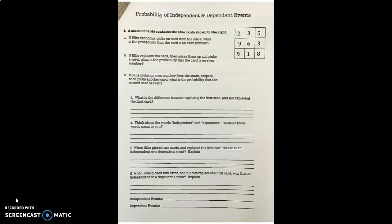The probability of independent and dependent events. Remember, independent means that it is standalone, it's all by itself, it doesn't have anything in control of it. A dependent event means that something has happened before it and kind of changes what it can be.